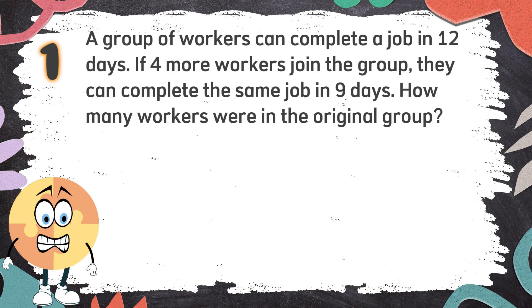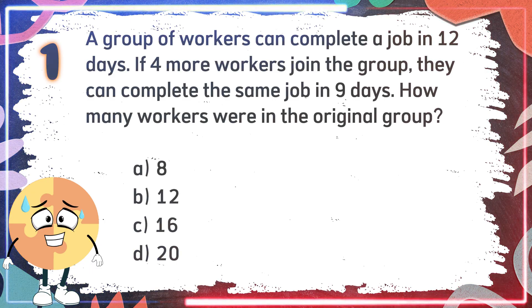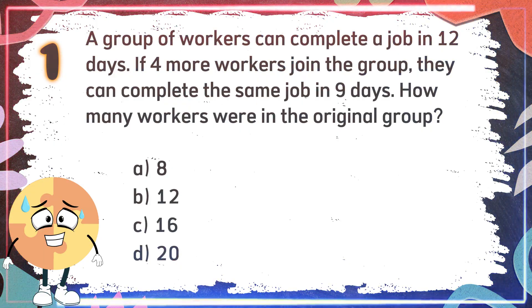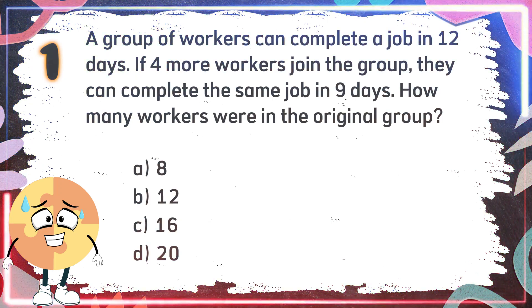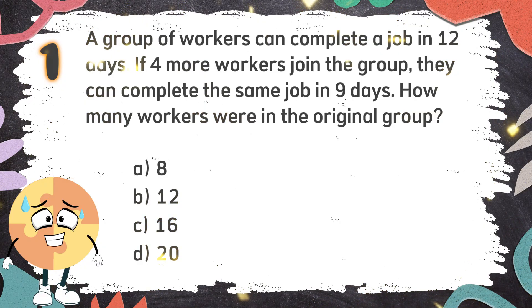Difficult Round! Number 1. A group of workers can complete a job in 12 days. If 4 more workers join the group, they can complete the same job in 9 days. How many workers were in the original group? The choices are: A. 8, B. 12, C. 16, D. 20. The correct answer is B. 12.